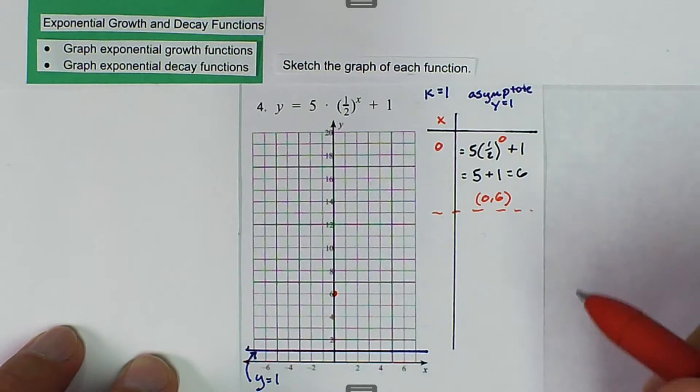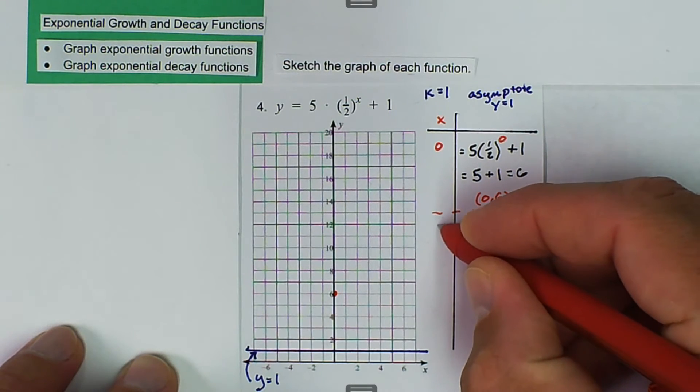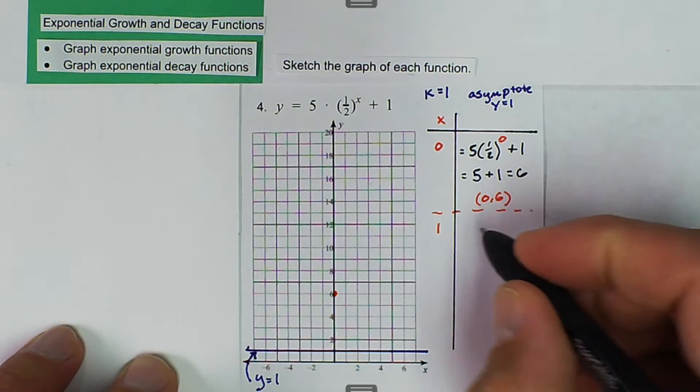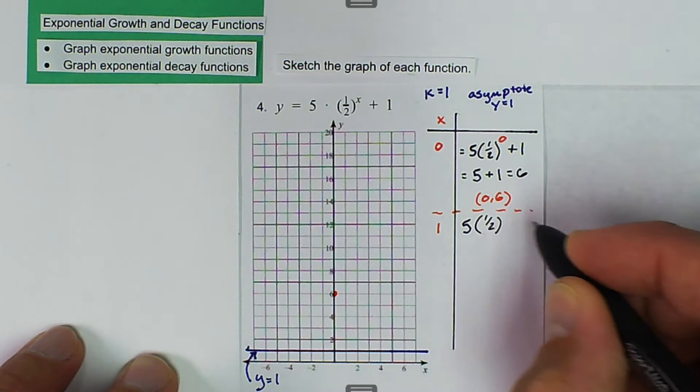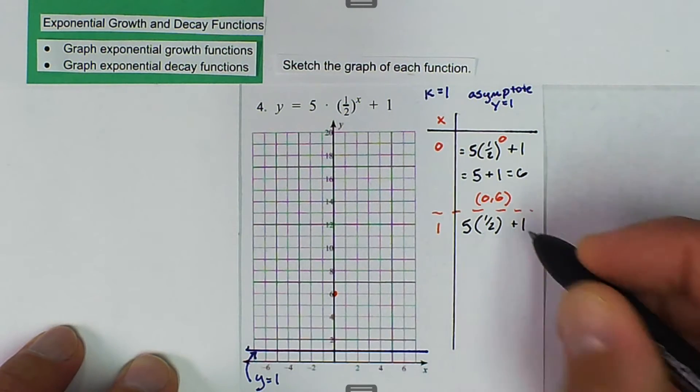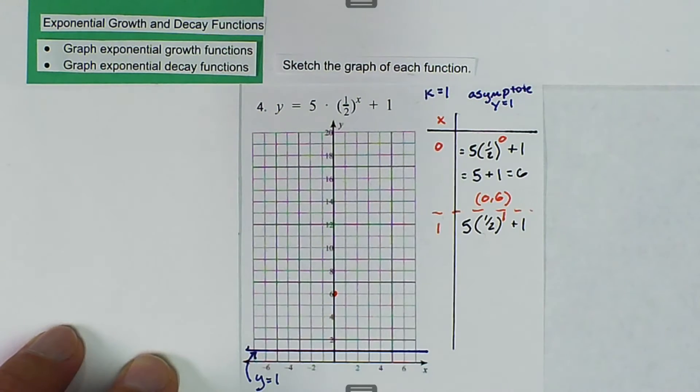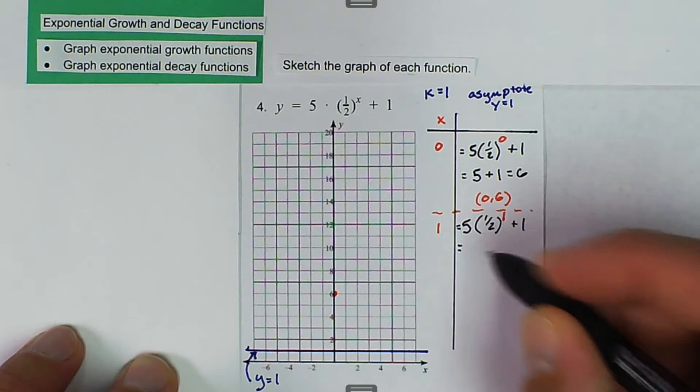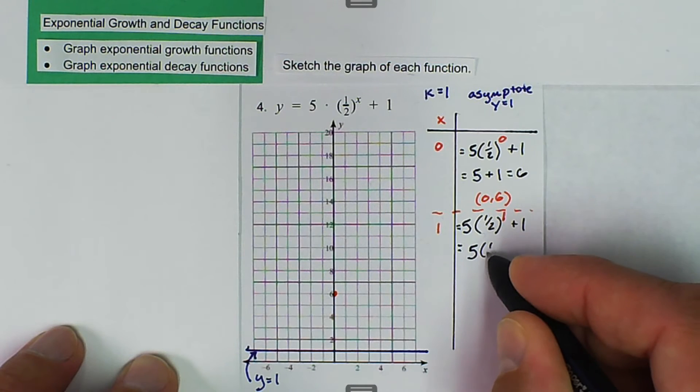And then the next one we can pick 1. So substitute 1 in, we get 5 times 1 half raised to the 1st power plus 1. So we're going to substitute 1 in for the x. And 1 half to the 1 is just 1 half.